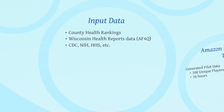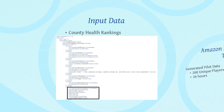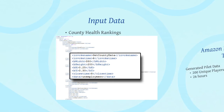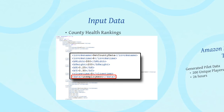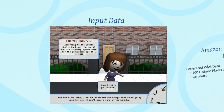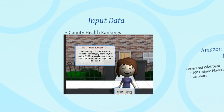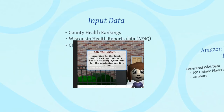Let's look at two examples. In the first example, we take data from the county health rankings and present this information to the user. The data is customized based upon the county the user lives in and the data points specified in the XML. Here we are looking at unemployment in Mercer County, New Jersey.